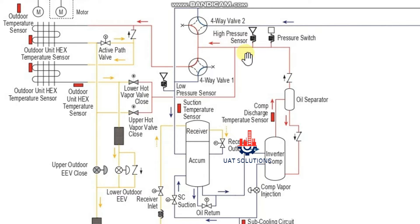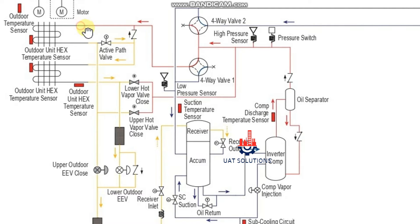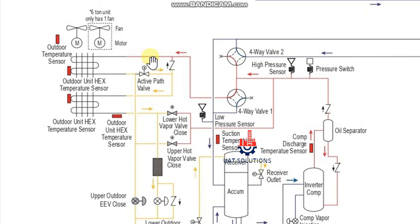From oil separator, refrigerant goes to 4-way valve. If the unit is running in cooling mode, then 4-way valve will send the gas to the condenser coil. Please note there are two condenser coils differentiated as upper outdoor and lower outdoor.